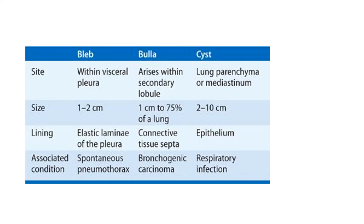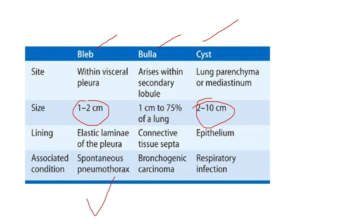In short, what have we learned? We have learned about bleb, bullae and cyst. A bleb is within the visceral pleura, and bullae arise within the secondary lobule. Cyst is within the lung parenchyma or mediastinum. Bullae can range from 1 cm to 75 cm of the lung, whereas bleb is usually within 1 to 2 cm and cyst is 2 to 10 cm. The associated condition with bleb is spontaneous pneumothorax, with bullae it is bronchogenic carcinoma, and cyst can be associated with respiratory infection.